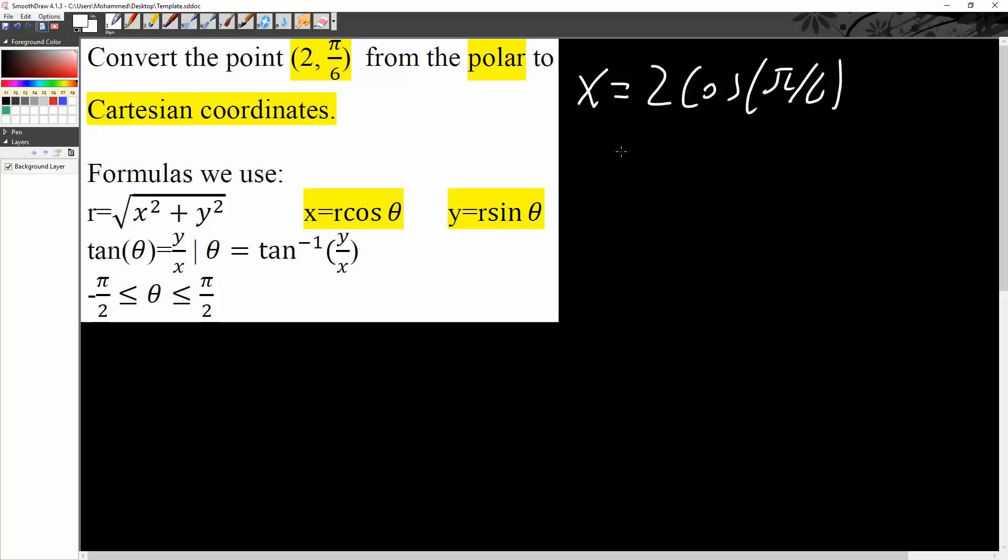And we know that 2 cosine π/6 is equivalent to square root of 3 divided by 2. So we can say that x is equal to square root of 3.